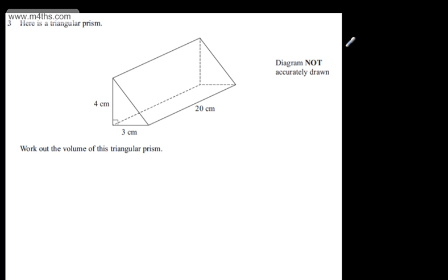We've got a triangle, so the area of the triangle is the base times by the height divided by 2. So if we look at the triangle, this will be 4 times by 3 divided by 2, and that's going to give us 6 centimetres squared.